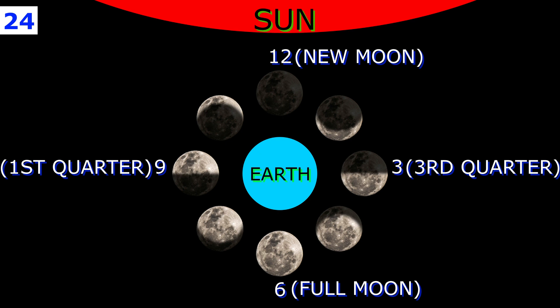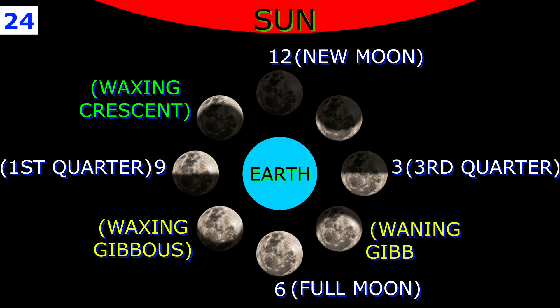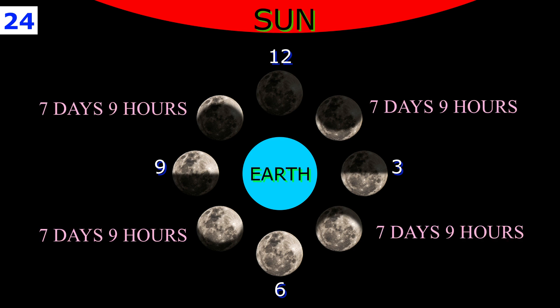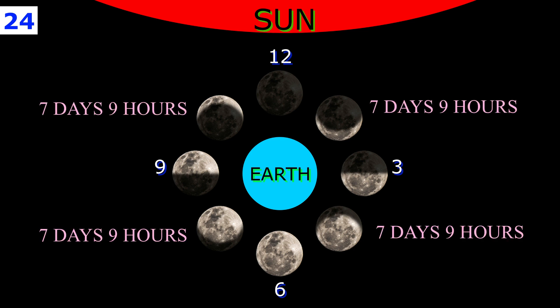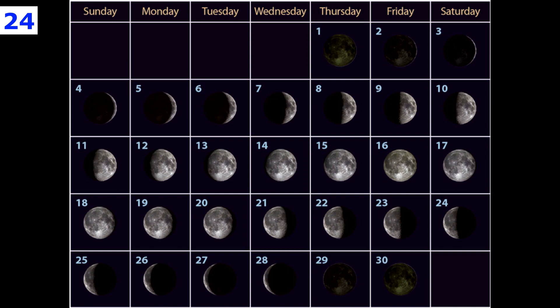The remaining phases — waxing crescent, waxing gibbous, waning gibbous, and waning crescent — mark the time frames between the primary phases. Each of these in-between phases lasts about seven days and nine hours. Altogether, the lunar cycle takes 29.5 days to complete. When you observe the moon in the sky, ask yourself which side is lit.